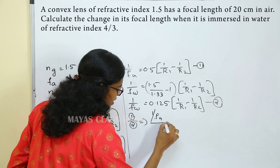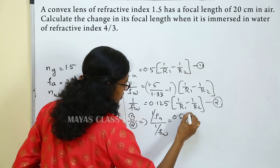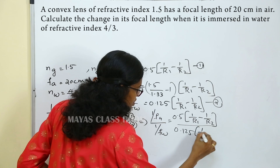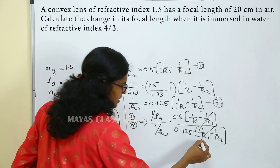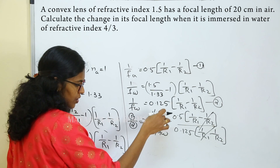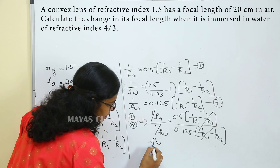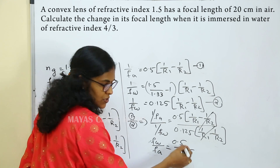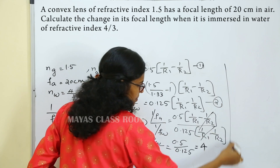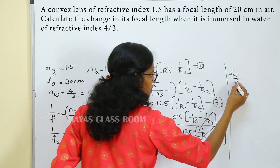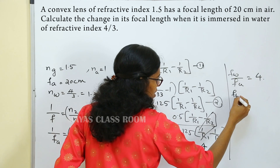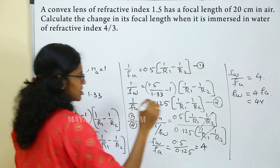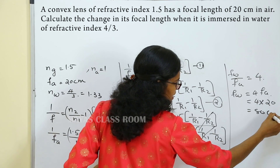Dividing equation 1 by equation 2: F water by F air equals 0.5 divided by 0.125, which equals 4. So F water equals 4 times F air. Since F air equals 20 cm, F water equals 4 into 20, which is 80 centimeters.